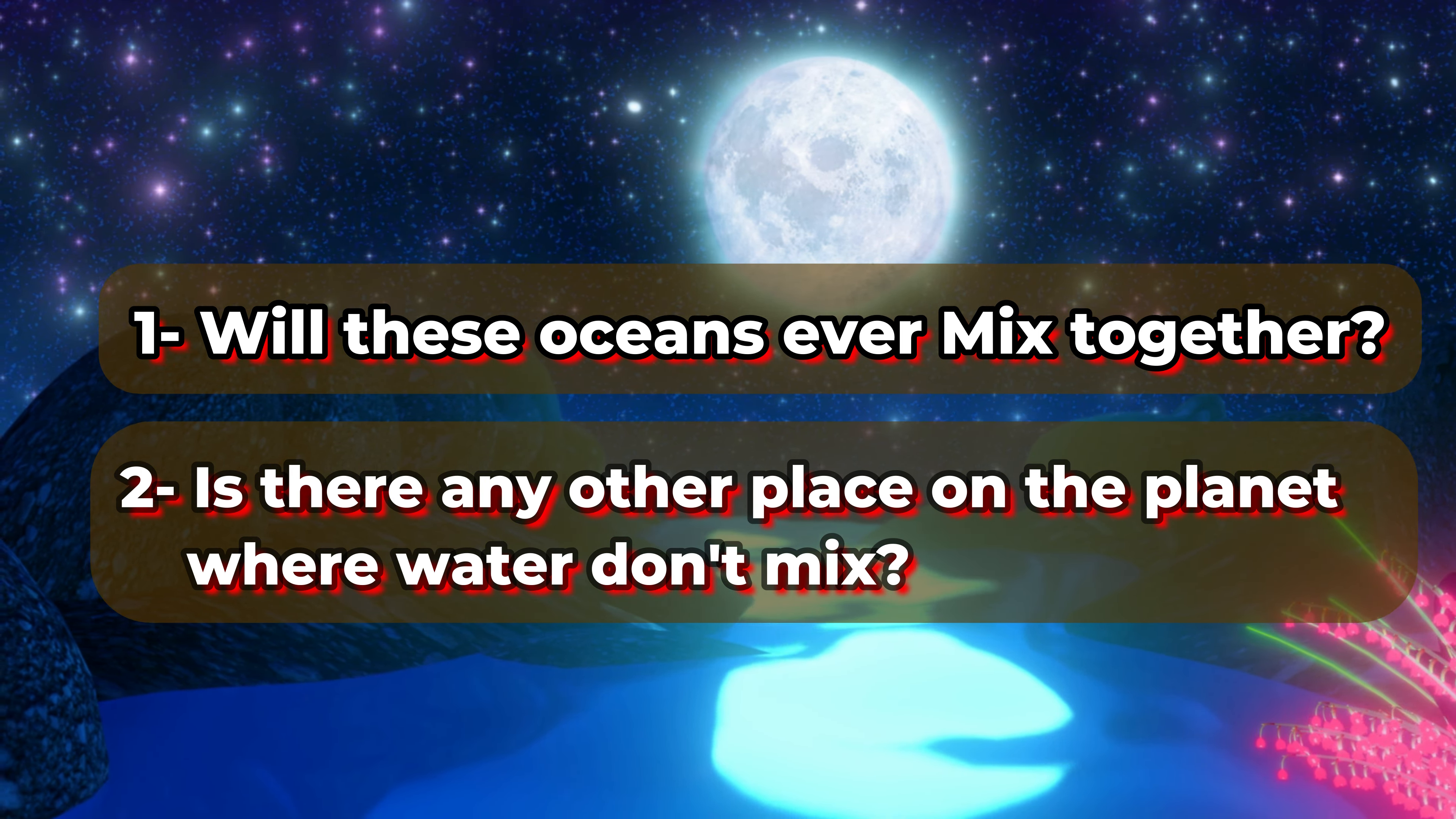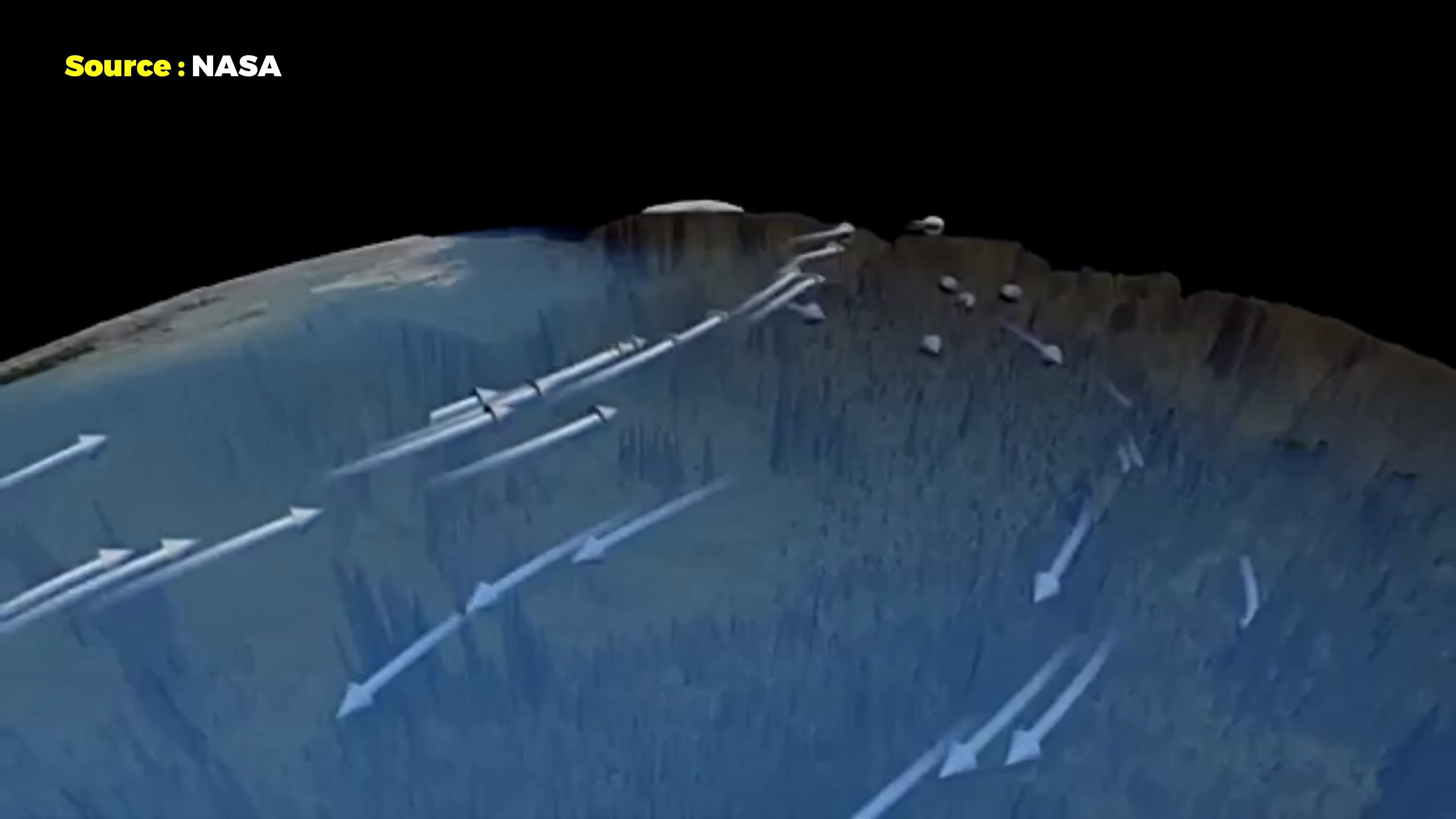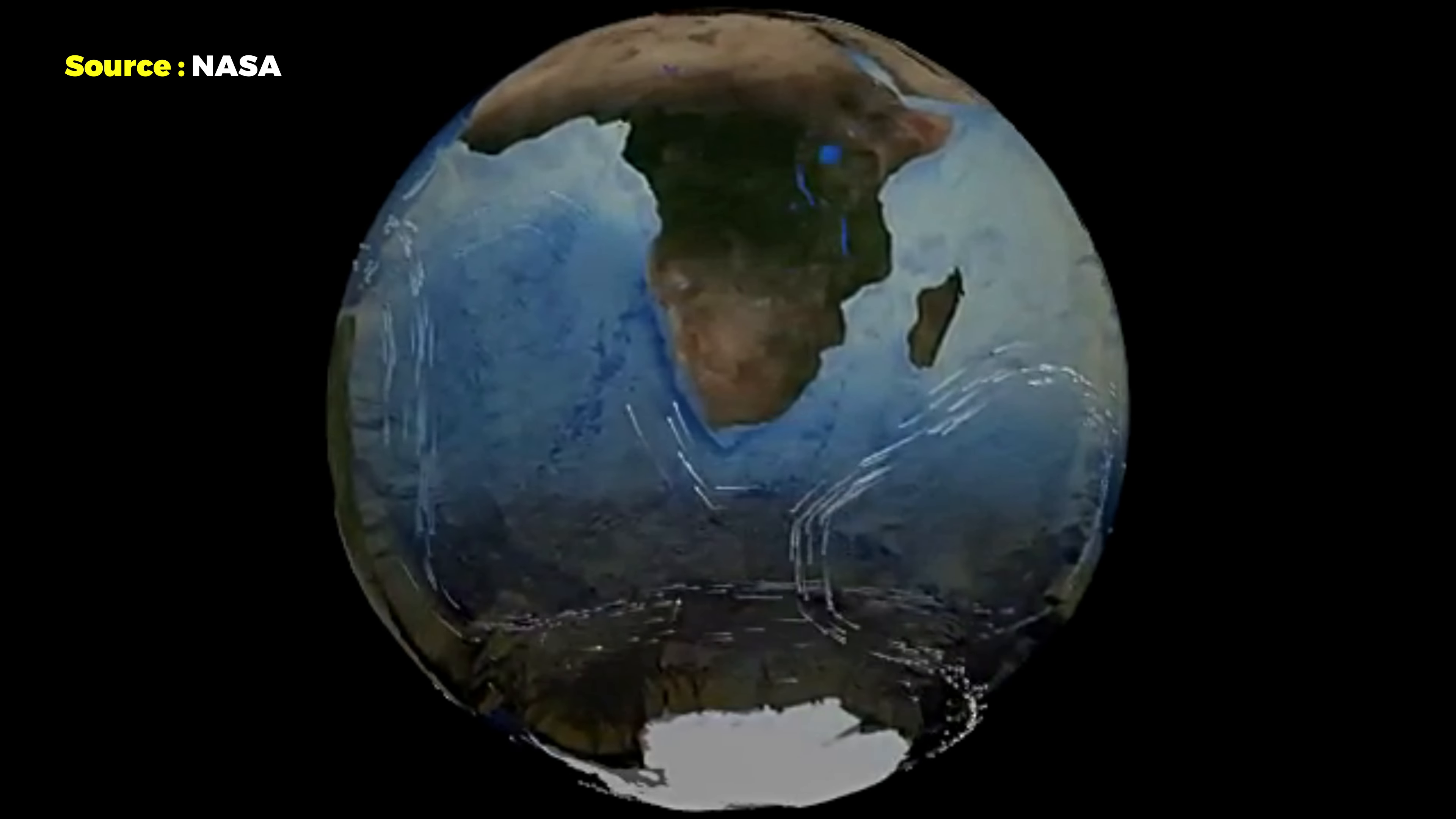So the answer to the first question about mixing of oceans is yes. It is happening continuously but slowly, primarily through the process called thermohaline circulation which is driven by the differences in temperature and salinity. This mixing is slowly causing the waters of the Atlantic and Pacific Ocean to become more uniform in temperature and salinity.